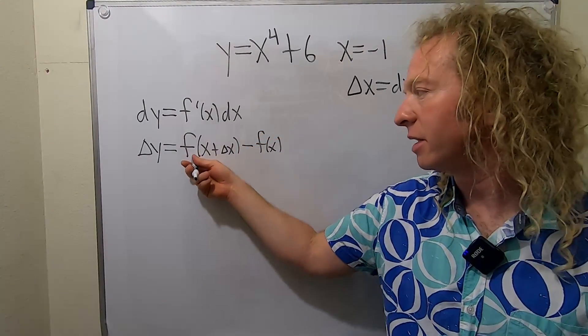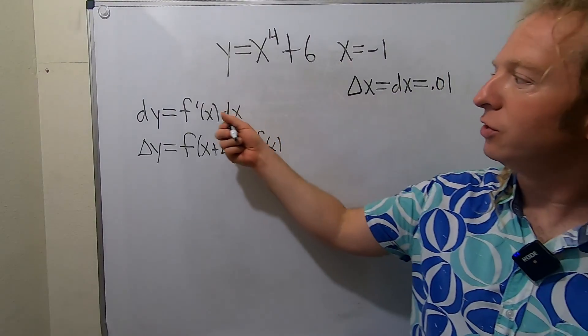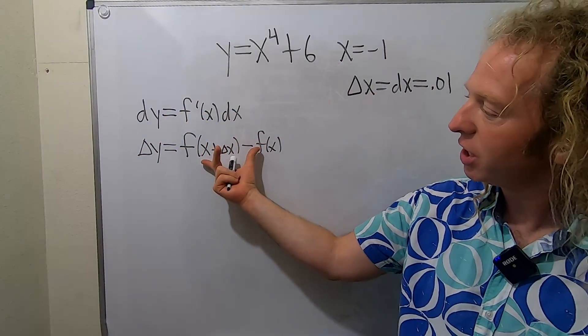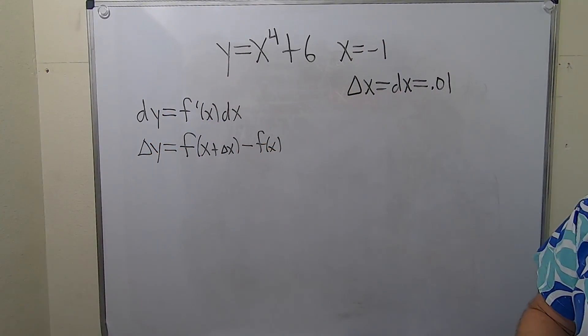The idea is that you have some change in y in the graph of your function, and you can use this formula to approximate the change in y. Delta y is the actual change in y, and dy is the approximation. It's a simple approximation method.